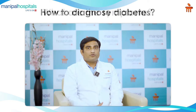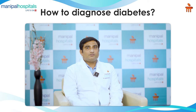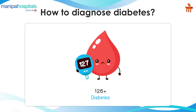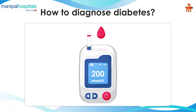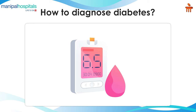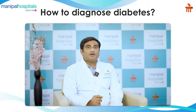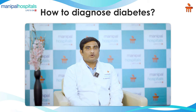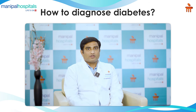How do you diagnose diabetes? Fasting sugar more than 126, or postprandial more than 200, or HbA1c more than 6.5 can be diagnosed as diabetes. Random sugar more than 200 with the above-mentioned symptoms can also be diagnosed as diabetes.